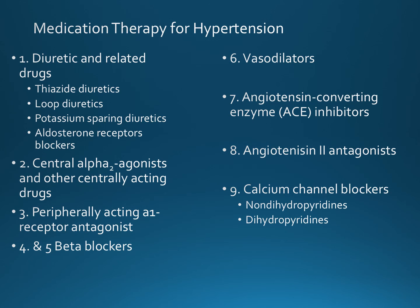Then there are the centrally acting alpha-2 receptor agonists. These stimulate the alpha-2 adrenergic receptors in the brain, which leads to decreased sympathetic outflow from the central nervous system, resulting in a reduction of norepinephrine production. Stimulation of the alpha-2 adrenergic receptors also reduces renin activity in the kidneys, resulting in decreased blood pressure.